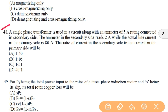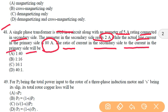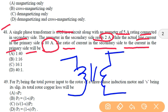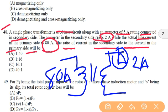In the next question, a single phase transformer is used in a circuit along with an ammeter of 5 ampere rating connected in secondary side. The ammeter in the secondary side reads as 2 ampere, while the actual line current in the primary side is 80 ampere. The ratio of current in the secondary side to the current in the primary side will be. So in this question, we have a single phase transformer whose primary and secondary currents are given. In the secondary side, we have a 5 ampere rated ammeter having 2 ampere as the current and in the primary side we have 80 ampere.